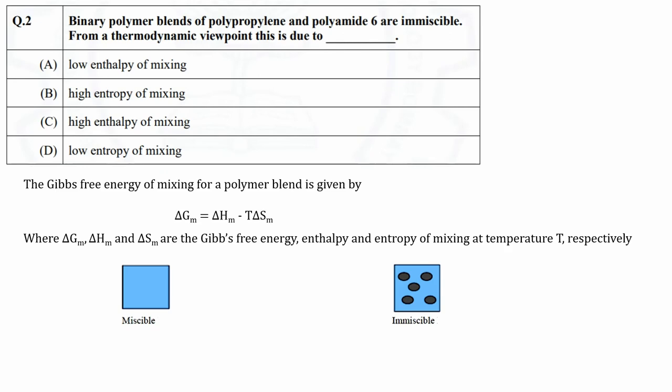Other than these factors, miscibility or immiscibility of polymers also depends on Gibbs free energy. If Gibbs free energy ΔG is negative, polymers form miscible blend. If ΔG is positive, polymers form immiscible blend. As in the question it is given that polypropylene and polyamide form immiscible blend, that means ΔG is positive.